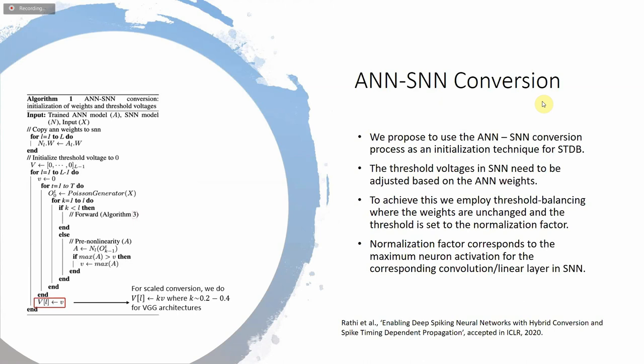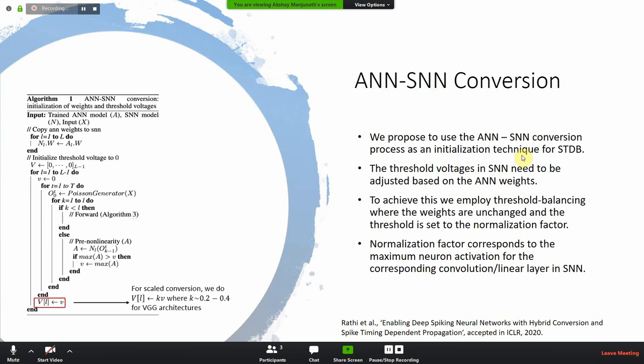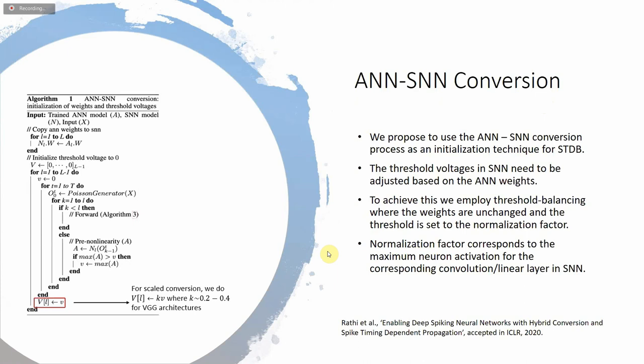The threshold voltages in the SNN are estimated based on the ANN weights. The first step is to generate a Poisson spike train corresponding to the entire training dataset. The process of generating the spike train and setting the threshold value is repeated for all layers of the network. We employed two approaches for setting the final voltage: the baseline conversion approach and the scaled conversion approach. In the baseline approach, we set the maximum activation for each layer to the threshold voltage. In the scaled approach, we scale the threshold voltage at each layer by K, where K is a value between 0.2 and 0.4 for VGG architectures.